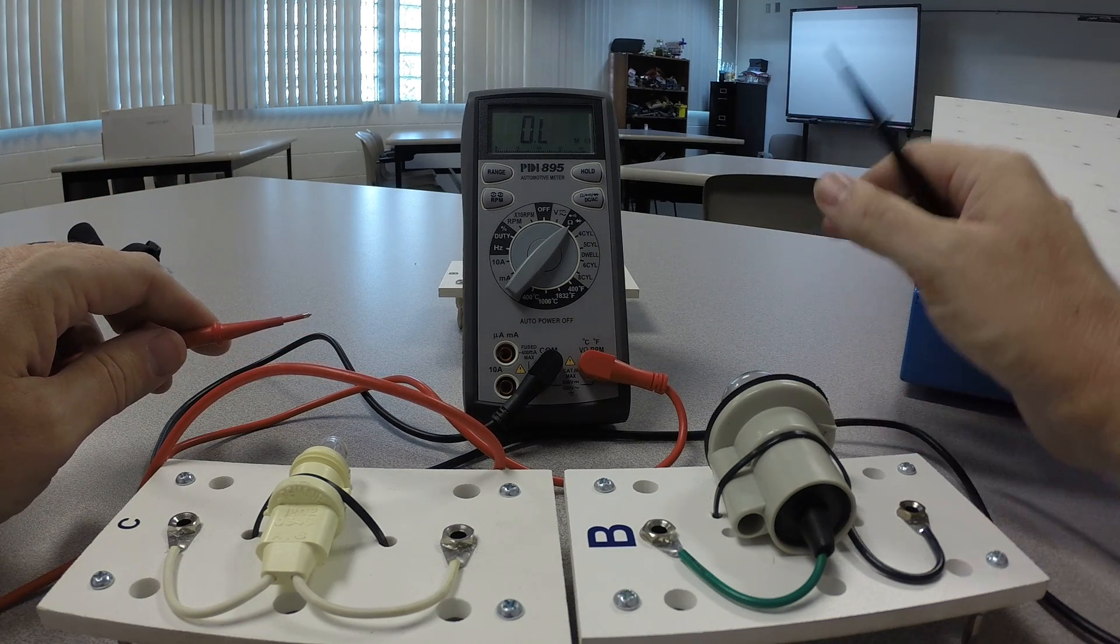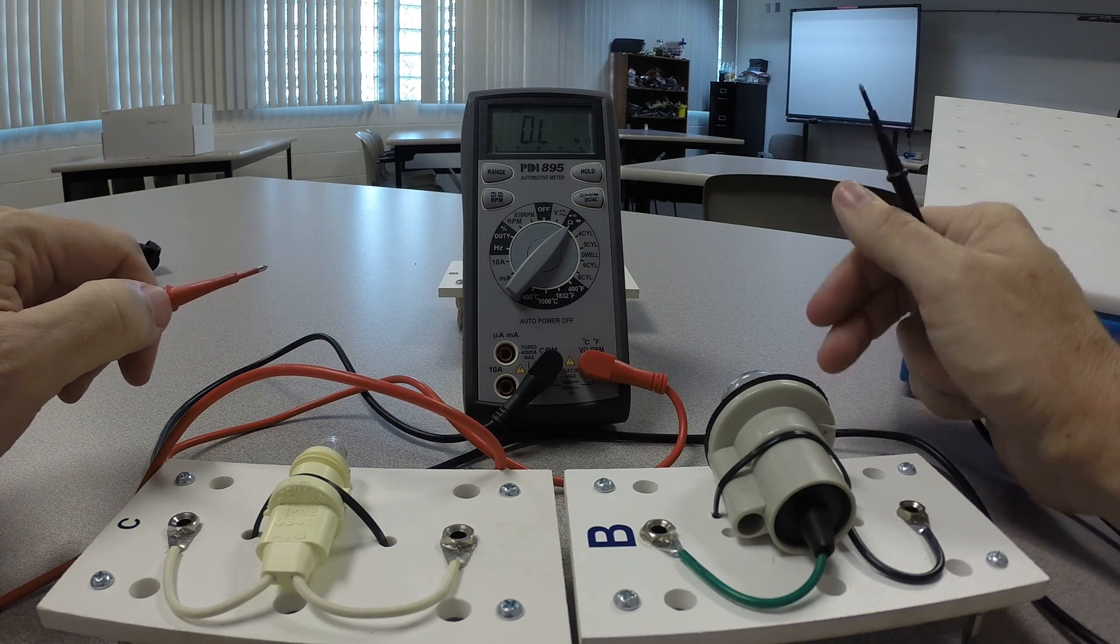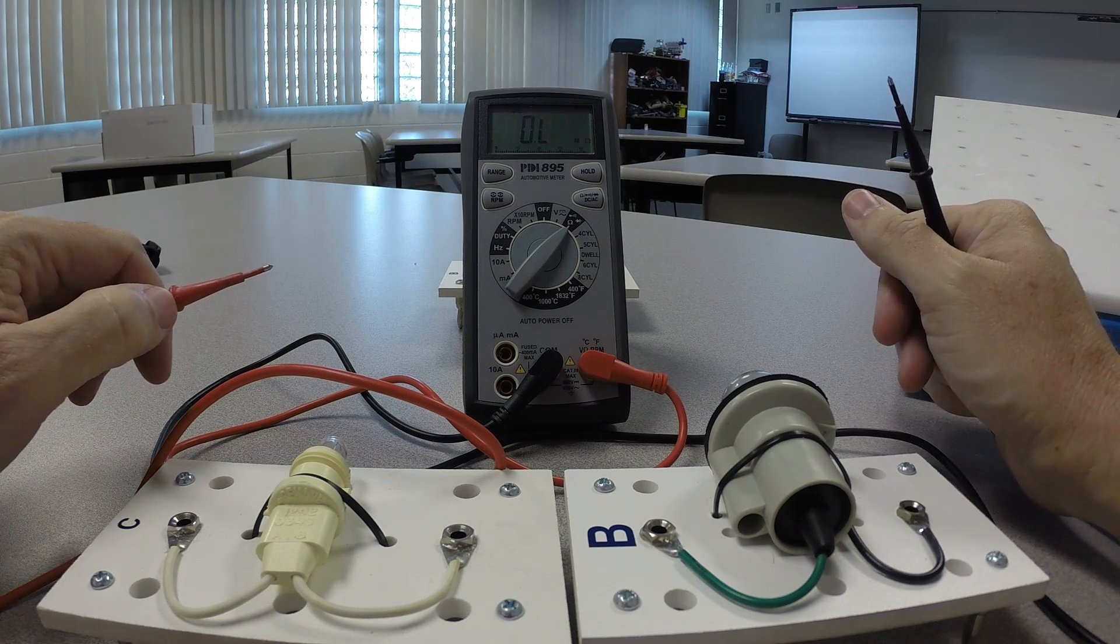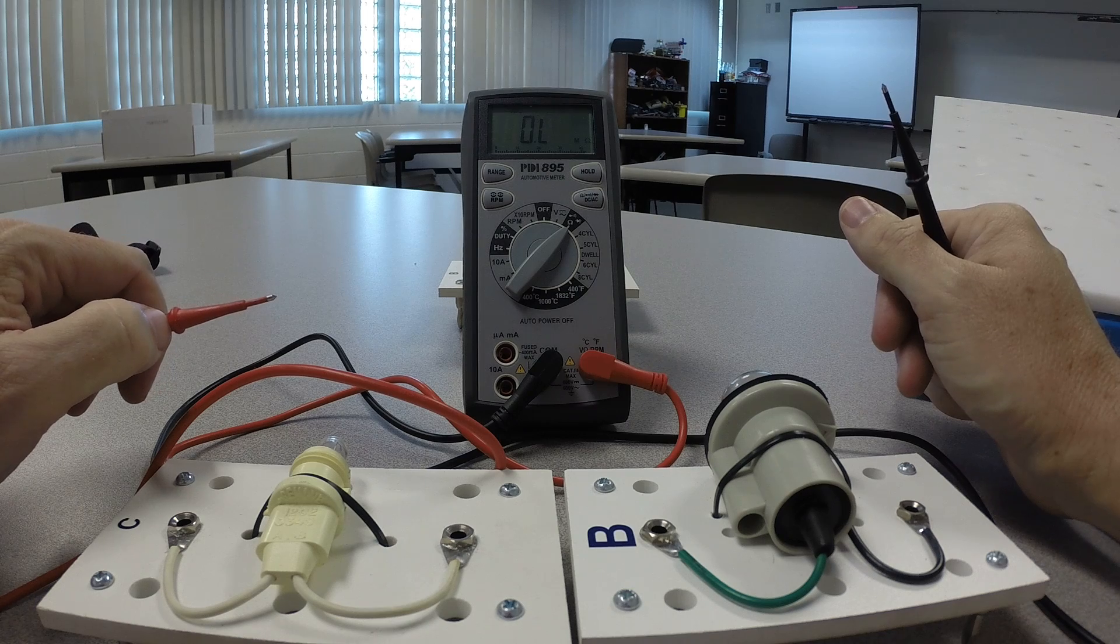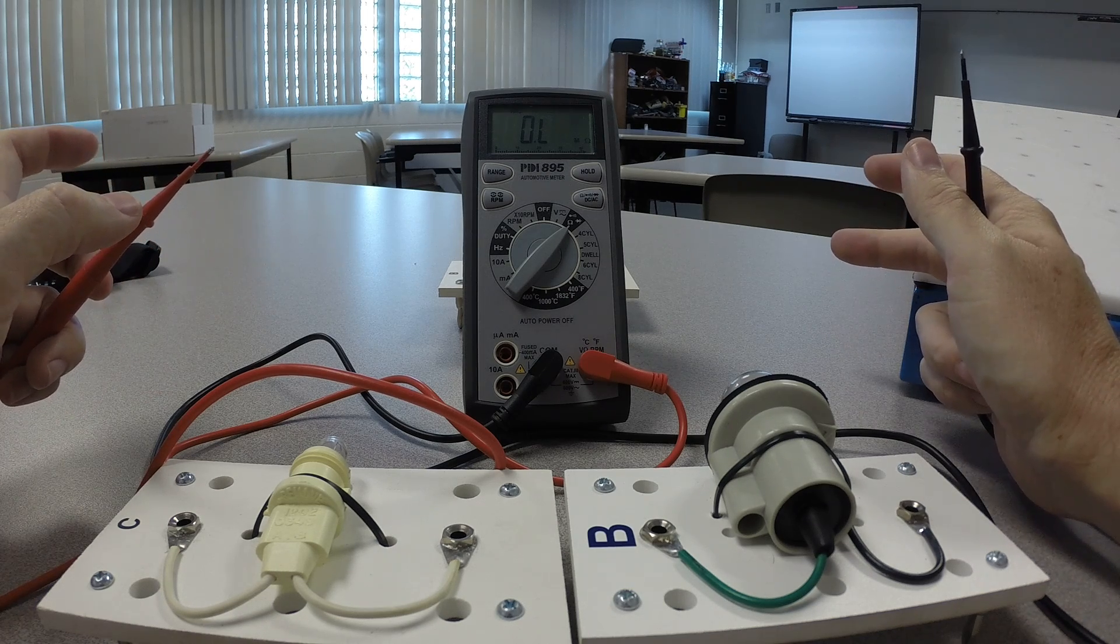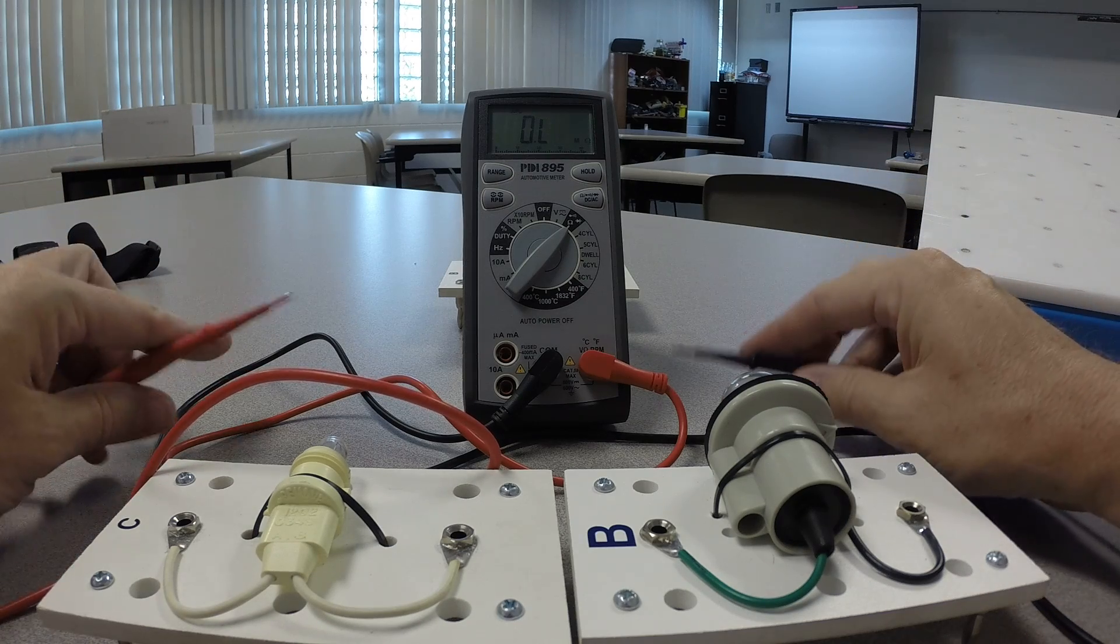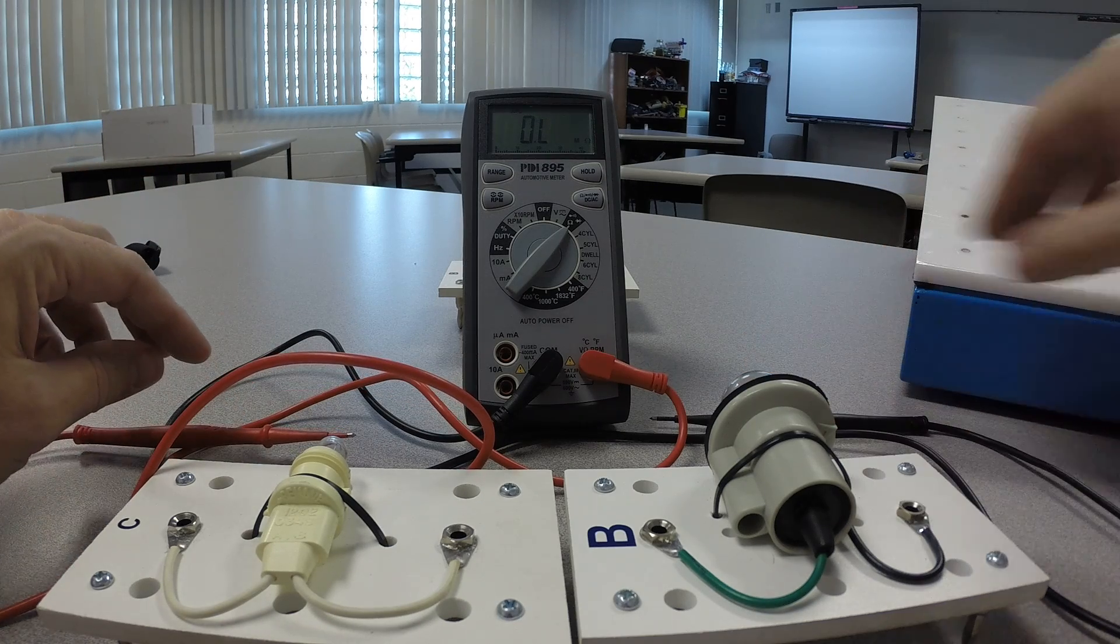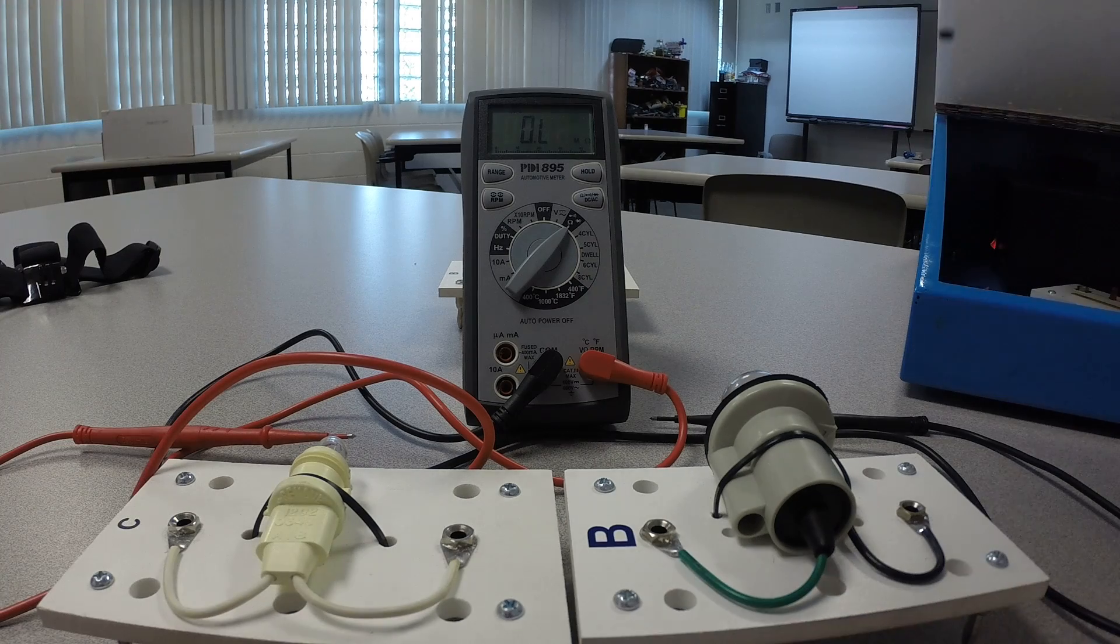Now we also see ohm readings in kiloohms or K ohms. One kiloohm is 1,000 ohms. So if we see 10 kiloohms, that's 10,000 ohms of resistance. That's quite a bit. But there's a lot of components out there that have resistance that is somewhere in that neighborhood.